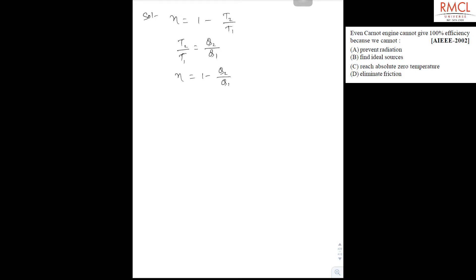And if you want to have obtained 100% efficiency, that is efficiency nu equal to 1, then Q2 must be 0.